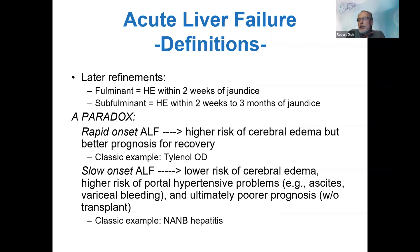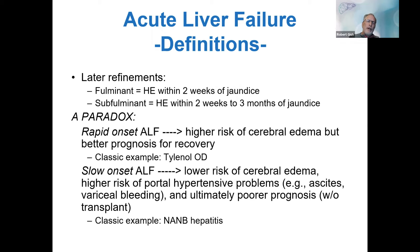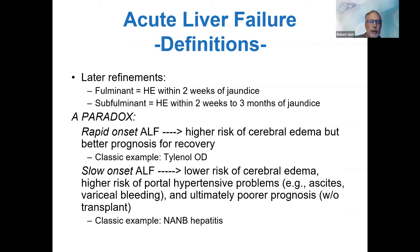Switching to acute liver failure. Acute liver failure has multiple definitions. Fulminant hepatic failure means hepatic encephalopathy within two weeks of jaundice. If you've got a high INR, high bilirubin, been sick for a month, but no encephalopathy — the term acute liver failure is more appropriate. Once you use 'fulminant' or 'sub-fulminant,' you are defining encephalopathy as part of their clinical presentation. Rapid onset acute liver failure carries higher risk of cerebral edema; slower onset has lower risk, but they still need to be monitored for cerebral edema.